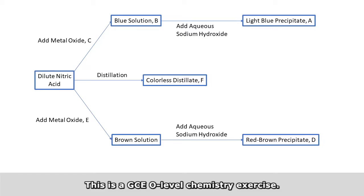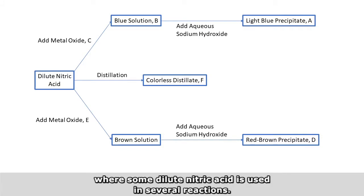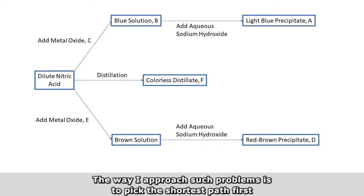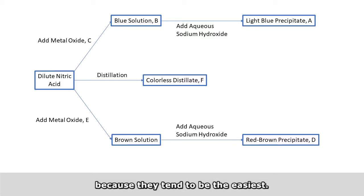So this is a GCSE level chemistry exercise. Given somewhat of a flowchart where some dilute nitric acid is used in several reactions, the way I approach such problems is to pick the shortest path first, because they tend to be the easiest.